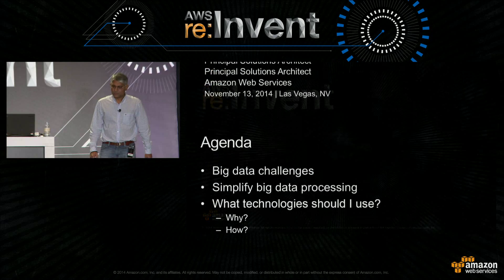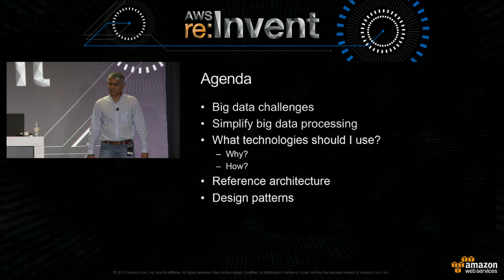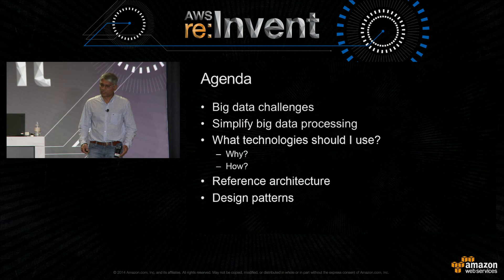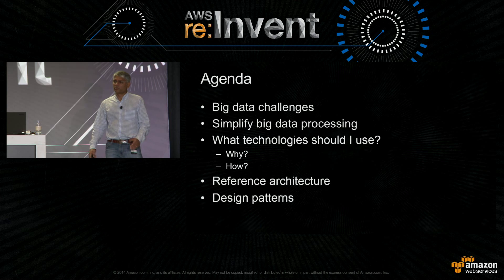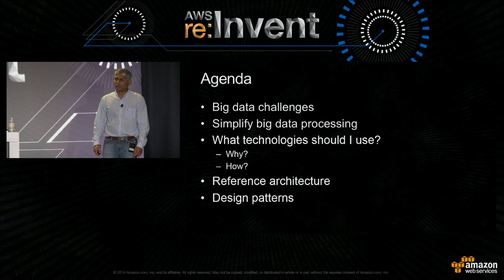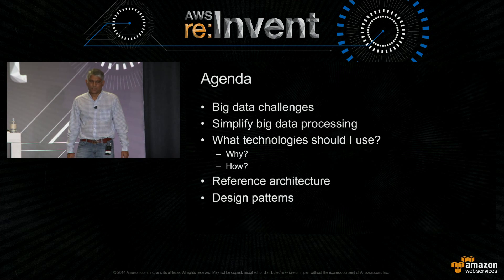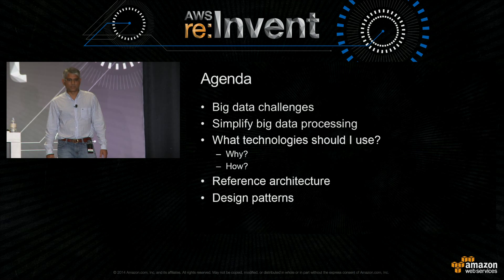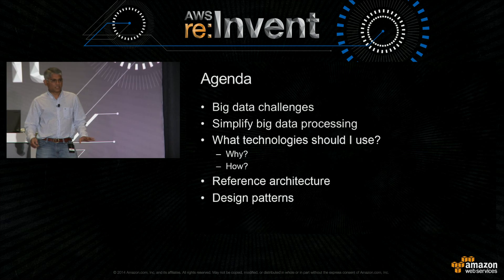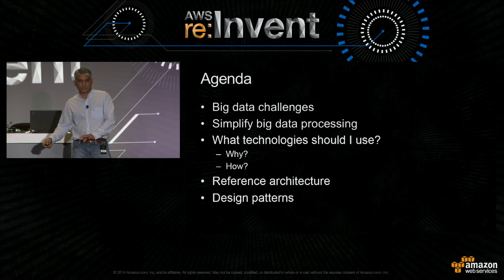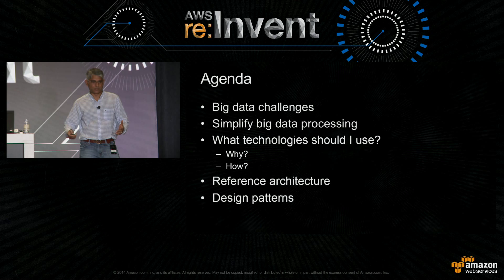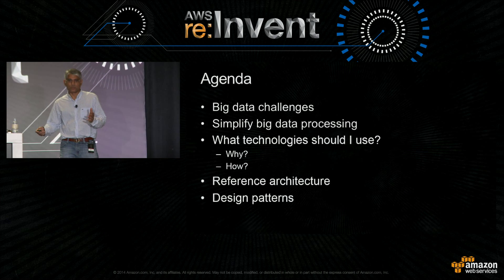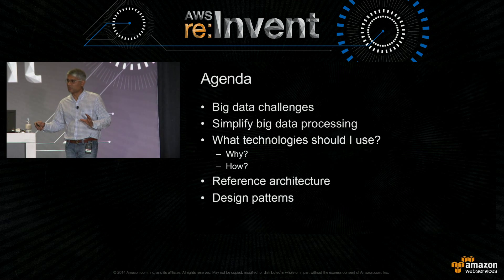Let's get started. In terms of the agenda, I'm going to go through some of the big data challenges our customers are having, and I'm going to try to simplify big data processing into multiple stages: ingest, store, process, and visualize. Then we'll go into each stage and figure out how to pick the right technologies — especially the why and how. I'll come up with a reference architecture and delve into a couple of design patterns and best practices. Amazon Cloud Drive is doing a talk at 3 p.m. about how they used these principles within Amazon.com, and I'm doing a talk with AdRoll tomorrow at 9 a.m. on AdTech. With 45 minutes, I'll just have time to go through the architectural patterns.